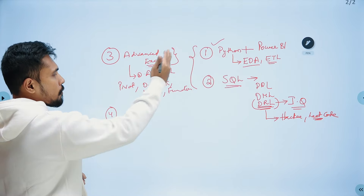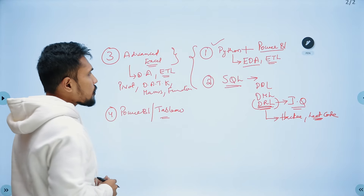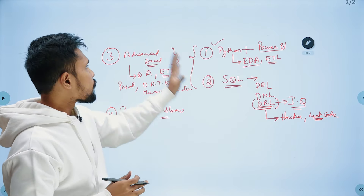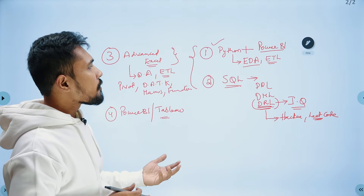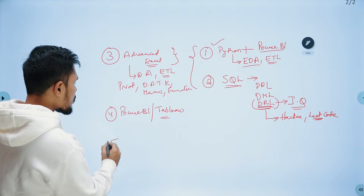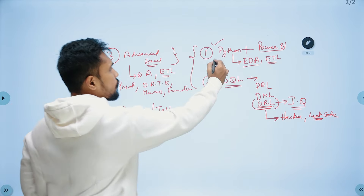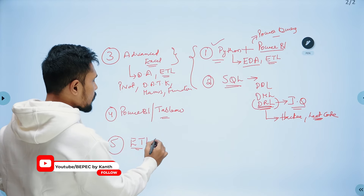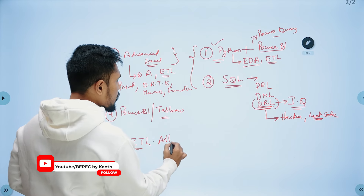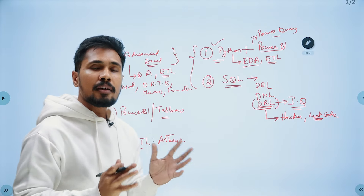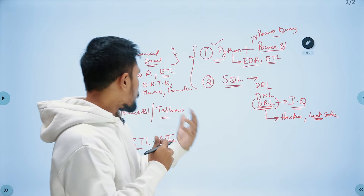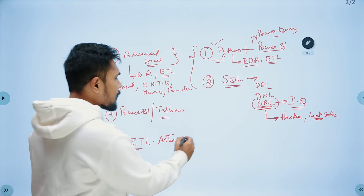The fourth skill is Power BI or Tableau — any data visualization tool. If you can also master an ETL tool, you are already using Python for ETL. Within Power BI, Power Query also lets you do ETL. Optionally, you can learn Alteryx, which is a dedicated ETL tool. Alteryx is not mandatory but will be an advantage.